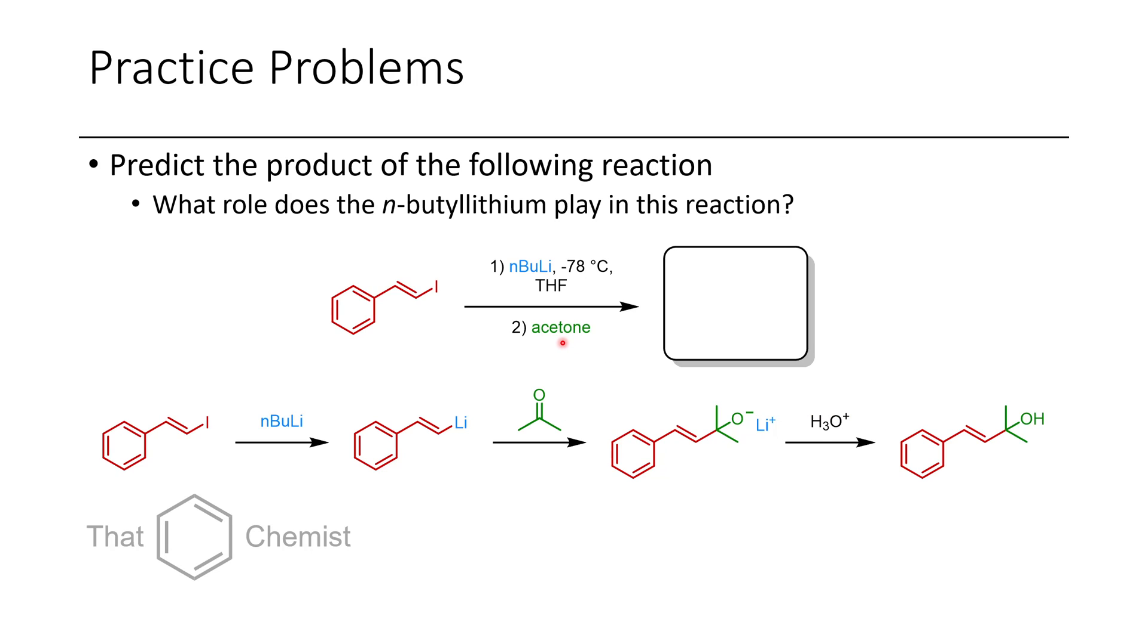Sometimes we think of acetone as a solvent, but we have to remember that acetone also has a carbonyl, and so sometimes it can act as an electrophile. An additional consideration is if we had put the acetone in in the first step, the alpha protons of acetone could have also been deprotonated. So a lot of chemistry is possible, which is why this is done stepwise.